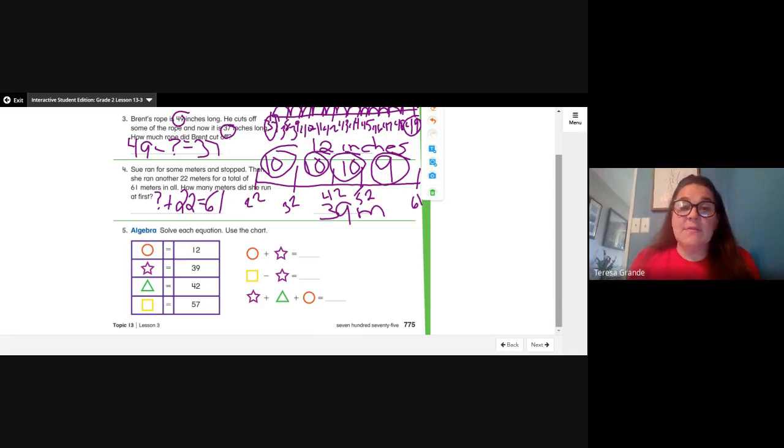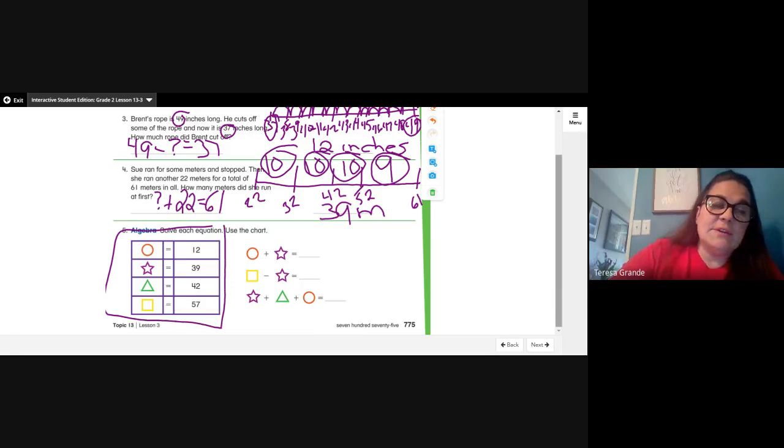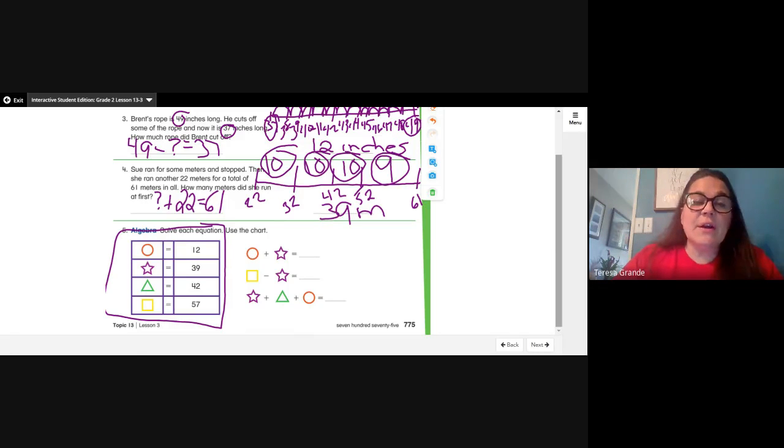Now this is using symbols to solve equations. In our chart, each symbol is worth a certain number. If we look here, how much is a circle worth? Right, it's worth 12. And a star? Good, 39. So 12 plus 39: 2 plus 9 is 9, 10, 11. Put your 1 in the ones place, carry the other 10. 3 plus 1 is 4, plus 1 more is 5, for an answer of 51.